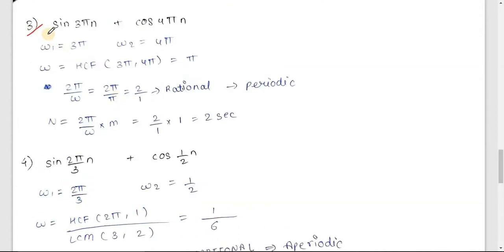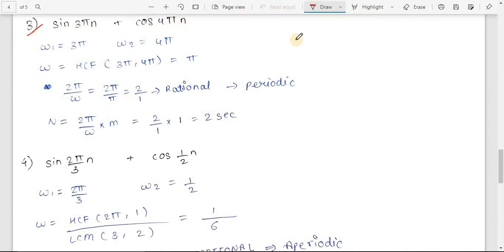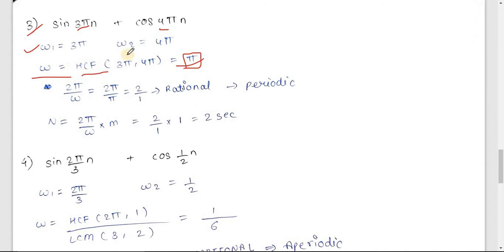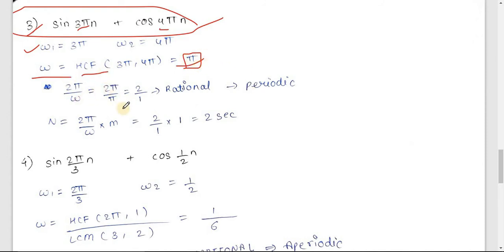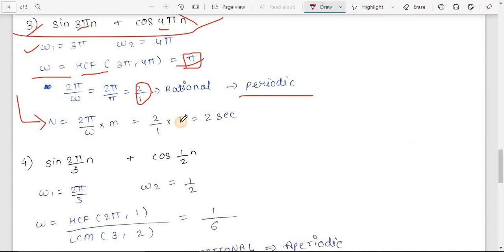The discrete sum is sin(3πn) + cos(4πn). ω₁ = 3π, ω₂ = 4π. The fundamental frequency ω₀ = HCF(3π, 4π) = π. To check periodicity: 2π/ω₀ = 2π/π = 2, which is rational — so the signal is periodic. Fundamental time period = (2π/ω₀)·m = 2·1 = 2. This also verifies that the sum of periodic discrete signals is always periodic.